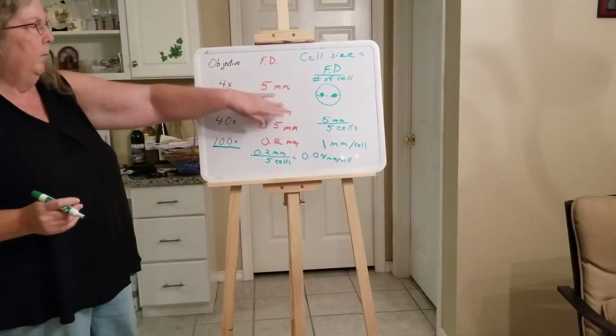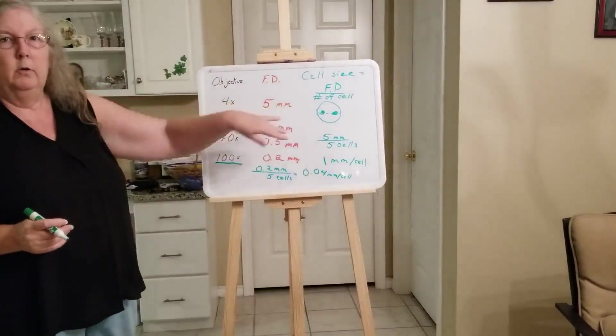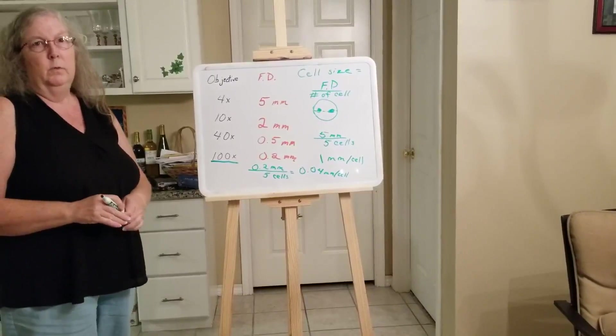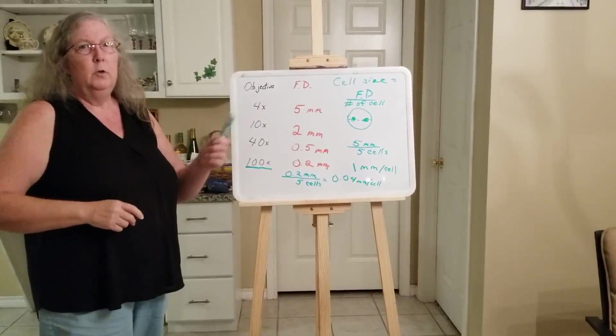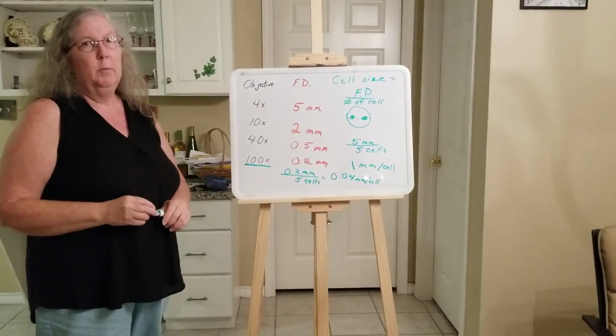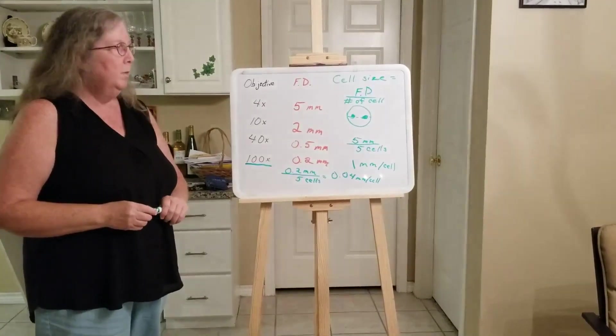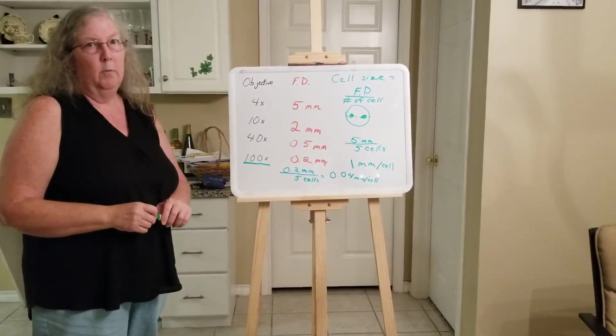So depending on the field diameter that you're looking at, you can see cells come in all different shapes and sizes. But how do you figure out the size? You use this formula. Field diameter divided by the number of cells that you estimate would fit across that diameter.